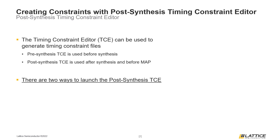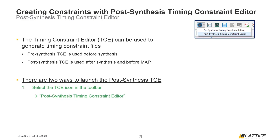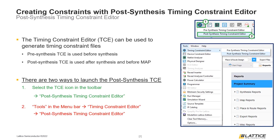There are two ways the post-synthesis timing constraint editor can be launched. The first way is to select the timing constraint editor icon from Radiant's toolbar, then post-synthesis timing constraint editor from the drop-down that appears. The second way is by selecting Tools from Radiant's menu bar, then timing constraint editor, then post-synthesis timing constraint editor from the drop-down. Both methods are functionally the same and will open the post-synthesis timing constraint editor in a new window in the Radiant workspace.